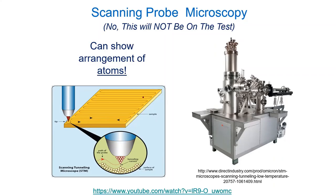What does scanning probe microscopy mean? Rather than using light or an illumination source, think of it like how a blind person would understand something around them by feeling. A blind person would feel — this is a wall, this is a tree, here is a dog. Scanning probe microscopy is more systematic: there's a little probe like a little finger that goes back and forth and feels the contour.